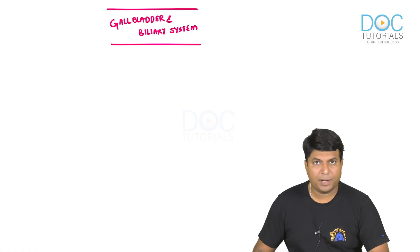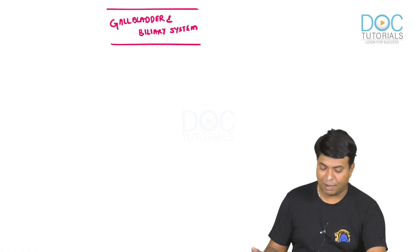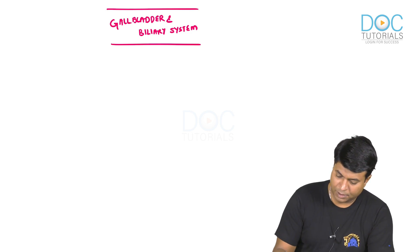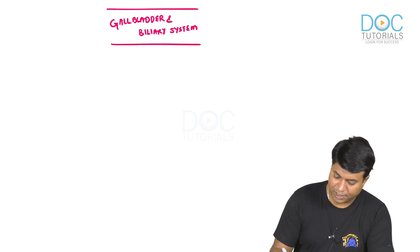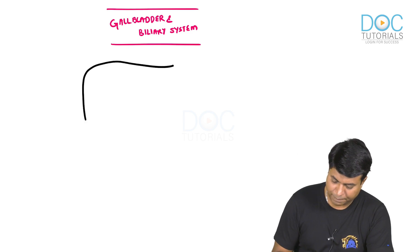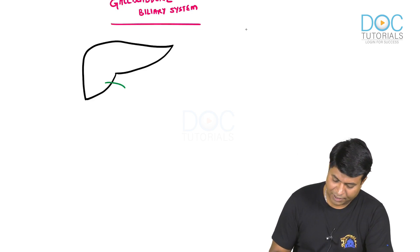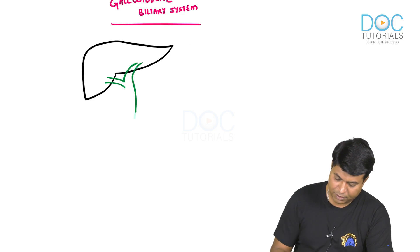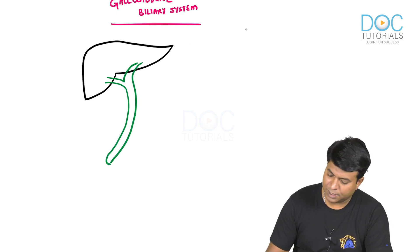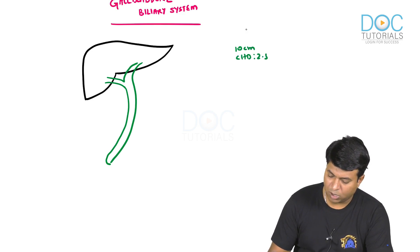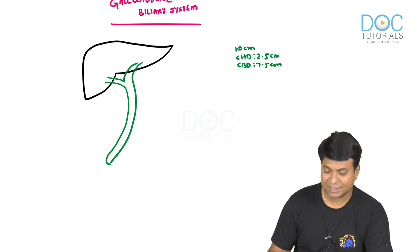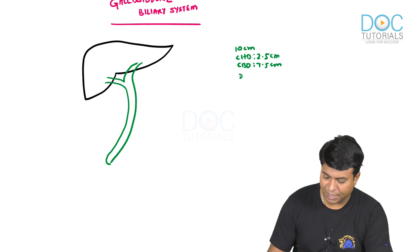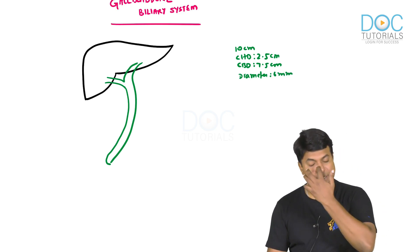The next module in the hepatobiliary pancreatic system is on the gallbladder and biliary system. Starting with important anatomy that is a usual exam question: the bile duct is 10 centimeters in length, in which the common hepatic duct is 2.5 cm and the common bile duct is 7.5 centimeters. The diameter of the bile duct is 6 mm.